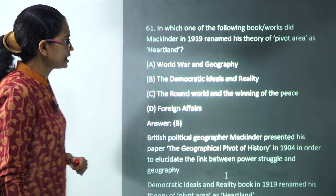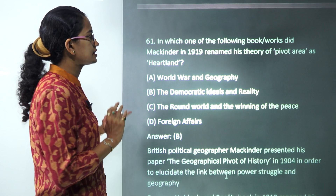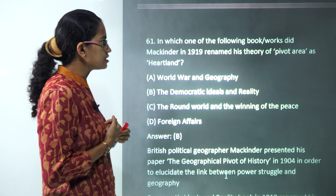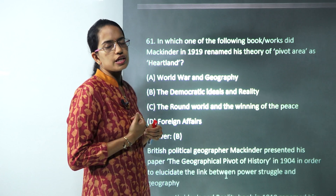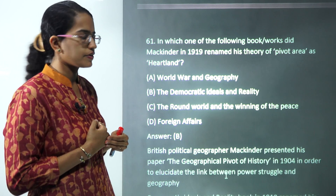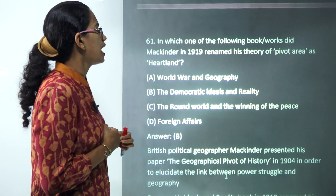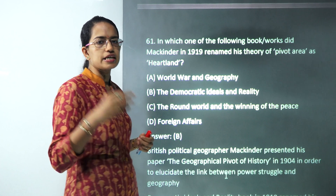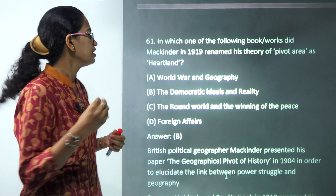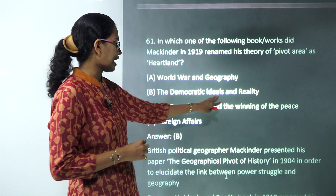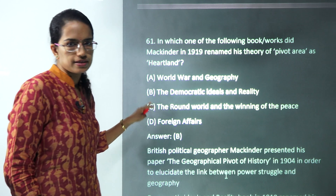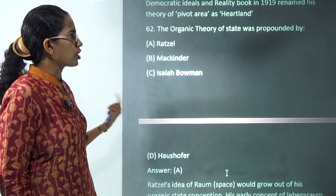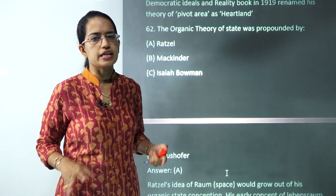The next question is about Mackinder's 1919 theory. His 1904 theory was given in the book 'Geographical Pivot of History,' and his 1919 book, where he talked about the pivot area as the heartland, was 'Democratic Ideals and Reality.' So option B is the correct answer.